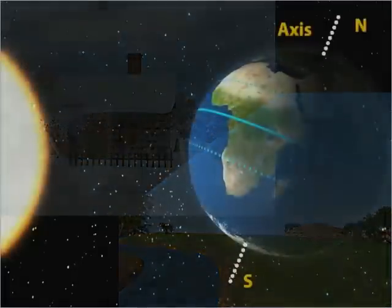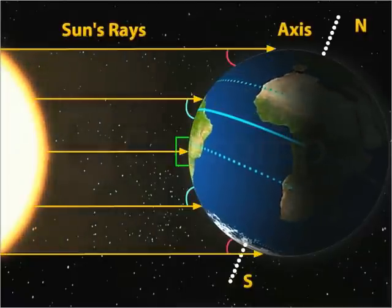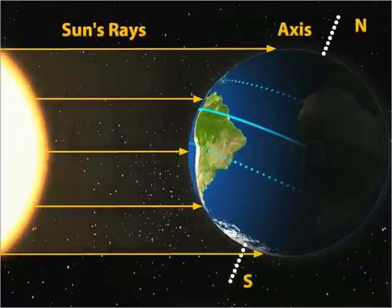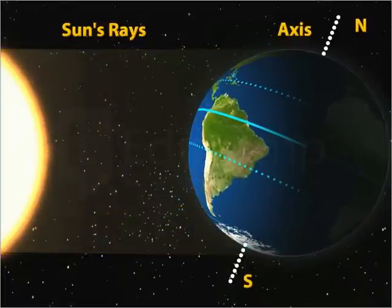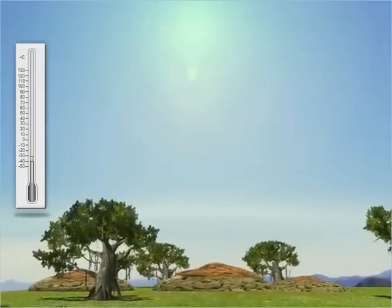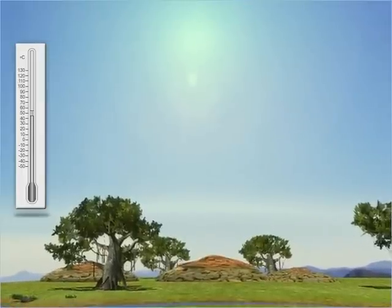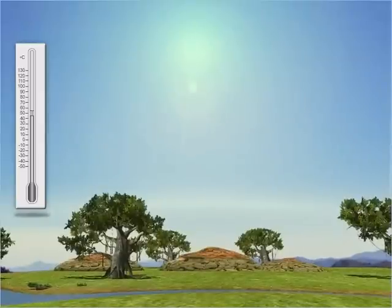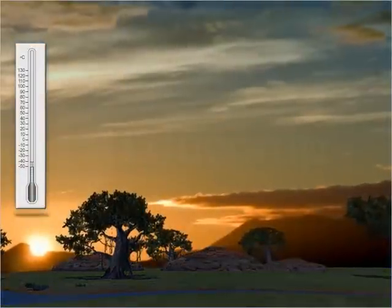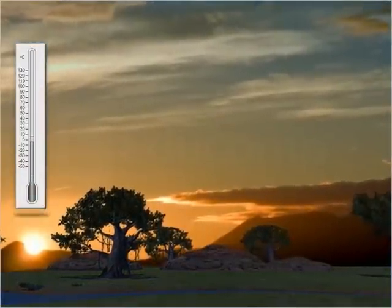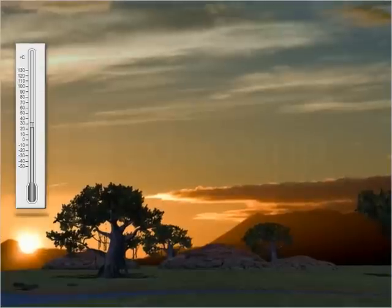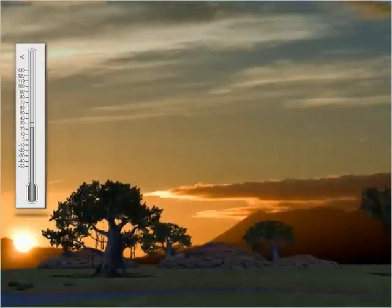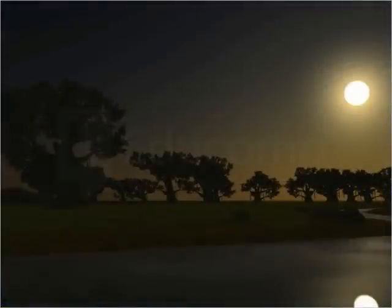The two major reasons behind this are the angle of the sun's rays and the shape of the Earth. At noon, the temperature is very high and very hot. This is primarily because the sun's rays fall vertically on the Earth. Whereas the temperature is mild in the morning because the sun's rays fall on the Earth at an inclined angle. The same is happening in the evening also.